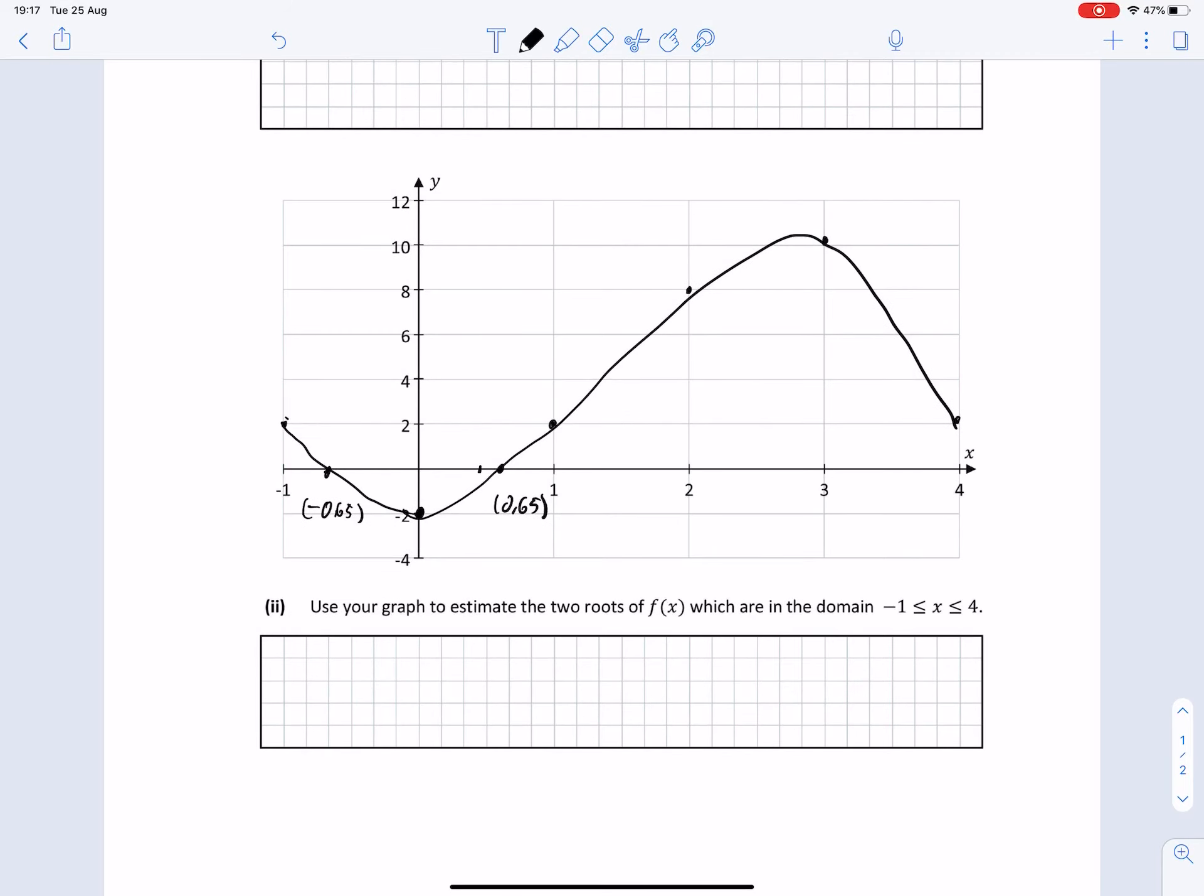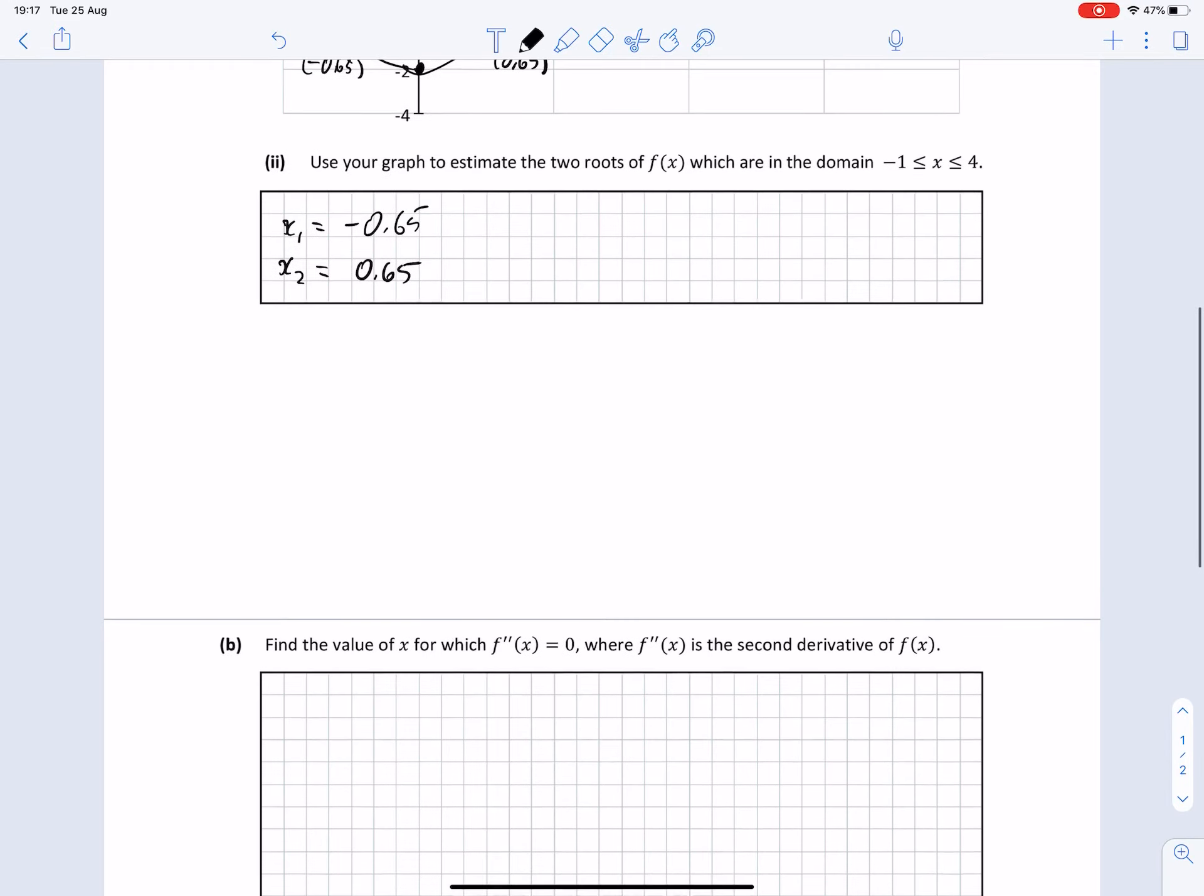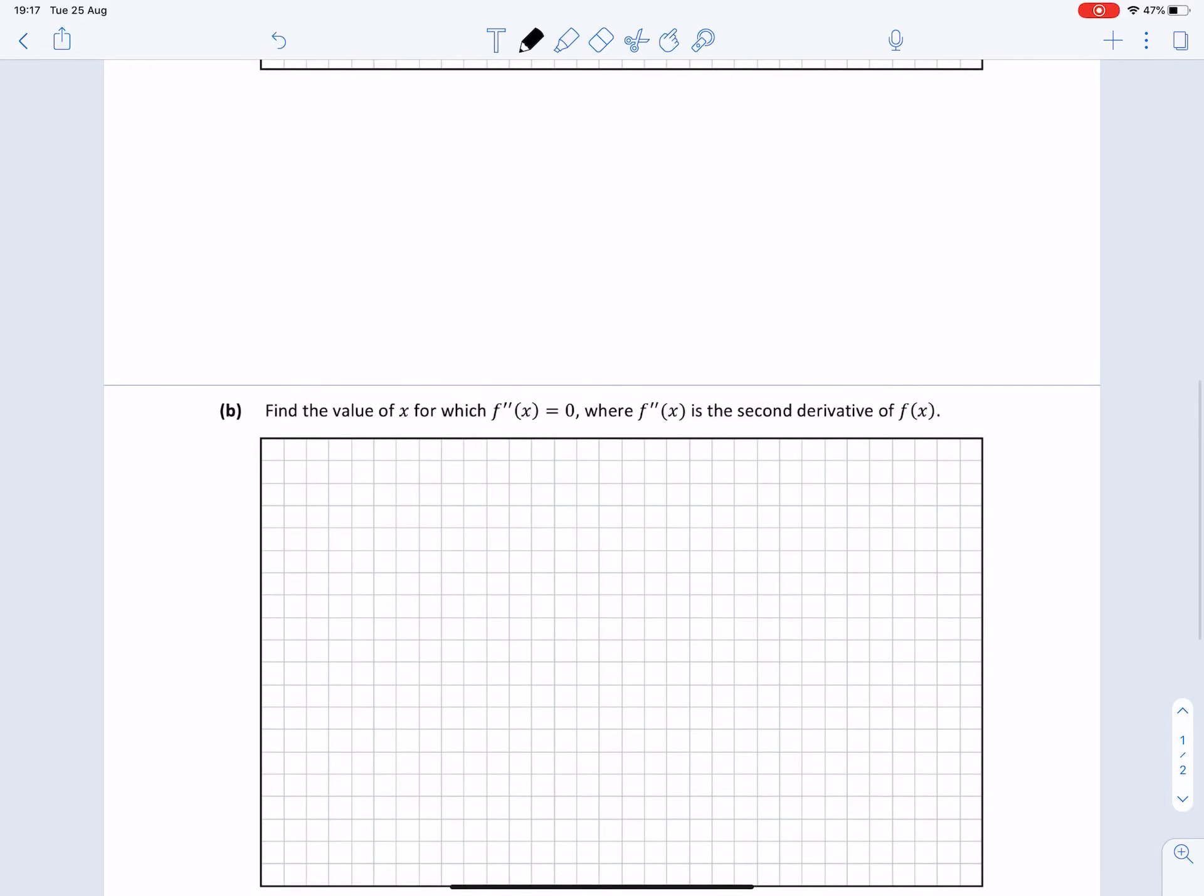So between minus 1 and 4 we have two roots: x1 equals minus 0.65 and x2 equals 0.65.